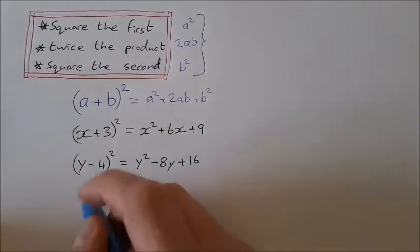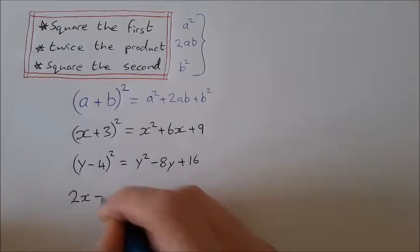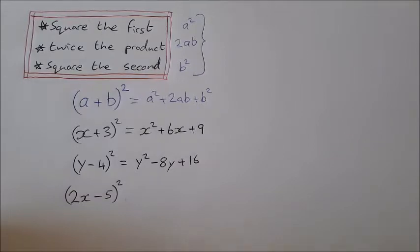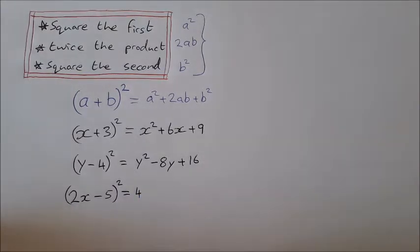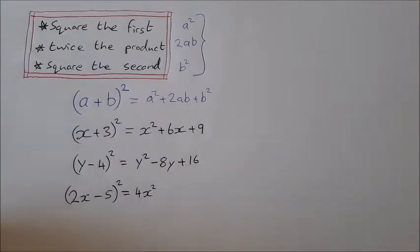Let's try one more: (2x-5)². Square the first: 2x times 2x is squaring 2 to get 4 and squaring x to get x², so 4x². Twice the product: the product of 2x and -5 is -10x.